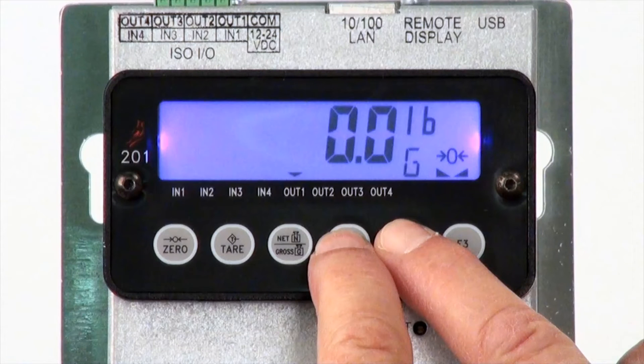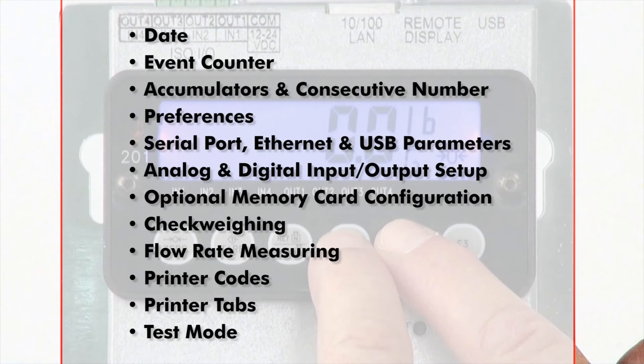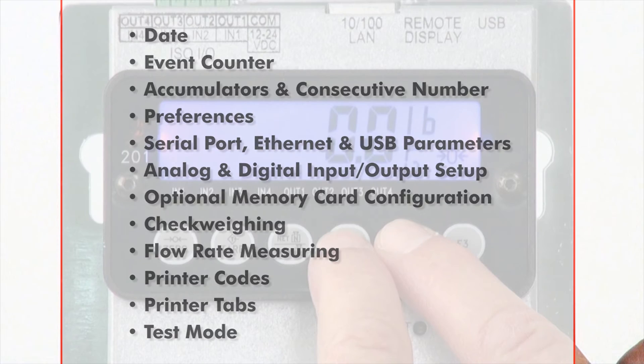This menu includes settings for the following: date, event counter, accumulators and consecutive number, preferences, serial port, Ethernet and USB parameters, analog and digital input output setup, optional memory card configuration, check weighing, flow rate measuring, printer codes, printer tabs, and test mode.